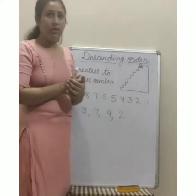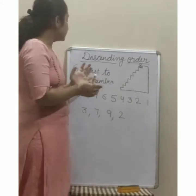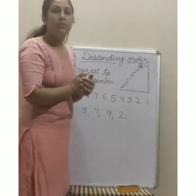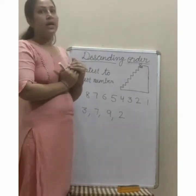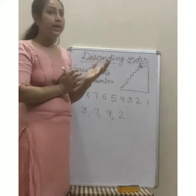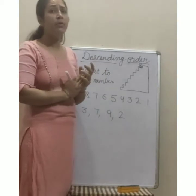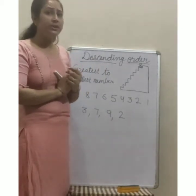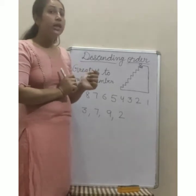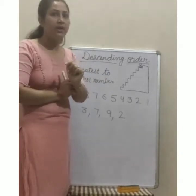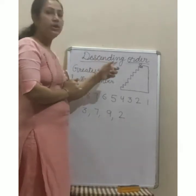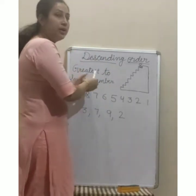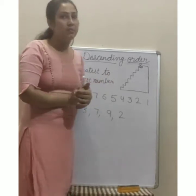But what is descending order? Descending order means greatest to smallest number. In the previous class, we have already learned about ascending order. हम ascending order के बारे में पढ़ चुके हैं। उसमें smallest to greatest number पे जाते थे, और descending order में उसका opposite है — greatest to smallest number जाना है।